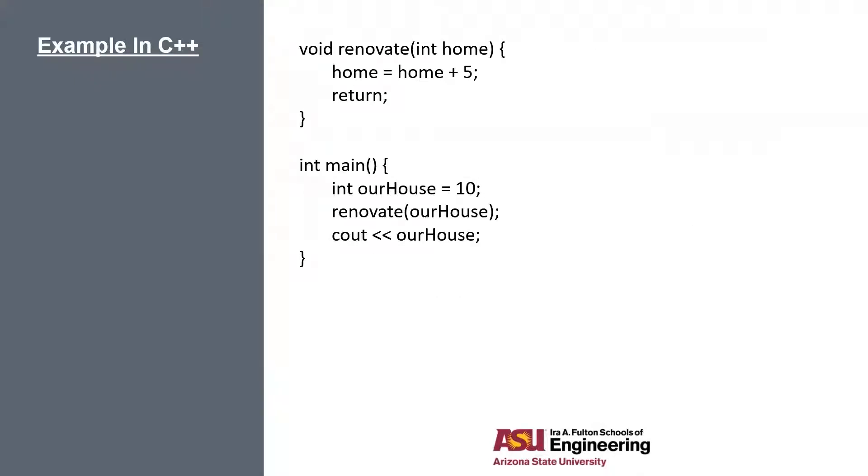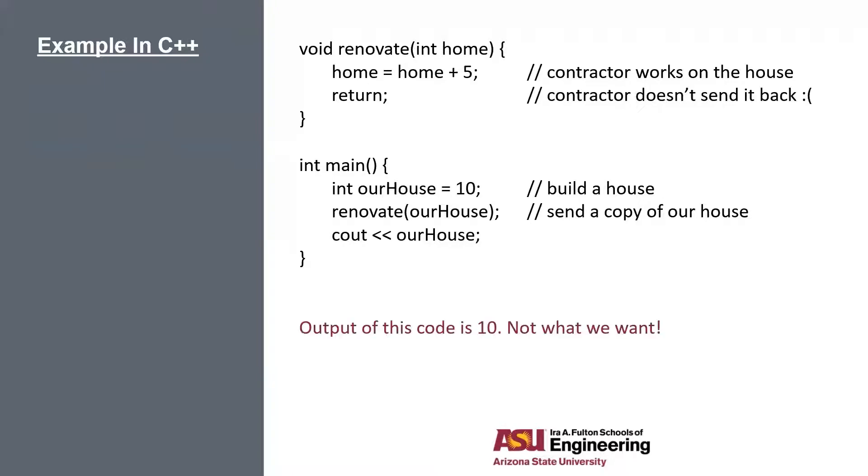So let's look at this example in C++. Let's start off in the main function. Let's use an integer variable to represent our house and set it equal to 10, and say we want to renovate it so it goes up to 15. So let's build our house and initialize it, then call the renovate function on our house. Now remember, when we call a function on a value, it's working on a copy of this value. Right now, this renovate function is going to add 5 to this home value, but this is just a copy of our house. When we exit out of this function, that house is just gone and our original house never got any renovations.